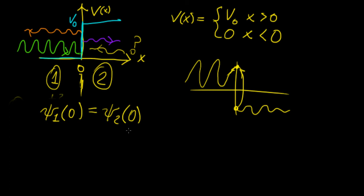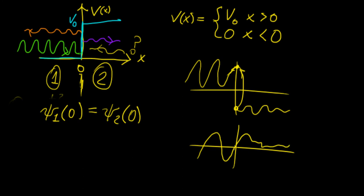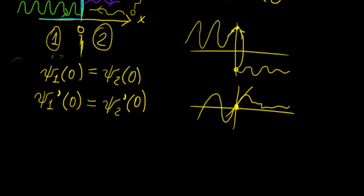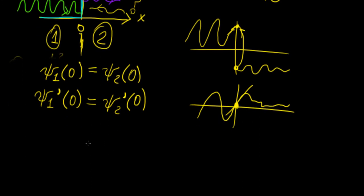The second boundary condition comes from continuity of the first derivative. Since the two wave functions meet at the same point x = 0, the gradient must be the same for both at that point. From this analysis we conclude that the first derivative of ψ₁ must equal the first derivative of ψ₂ at x = 0. We'll now apply both conditions and solve for the constants R and T.